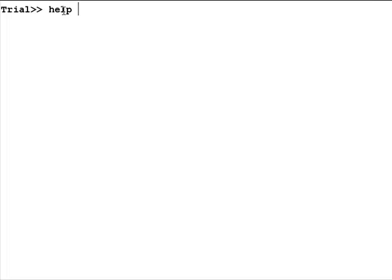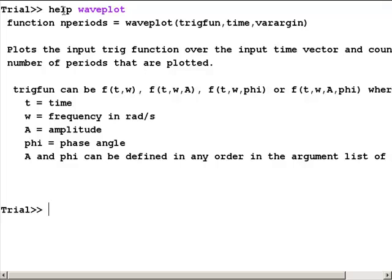First thing we'll do is bring up the help comments that we wrote, just to remind us how to call the function. We know that we need to send this another function that it will call trigfun. So, the first thing we're going to do is define some function, and we'll use a one-line anonymous function. MATLAB, for simple mathematical functions, can let us define that user-defined function in the command window or in another script with one line.